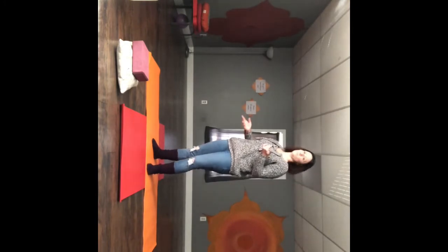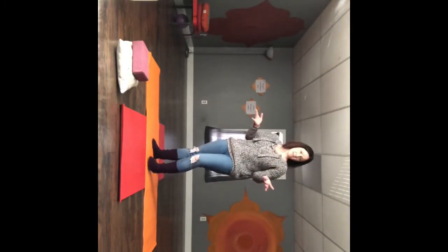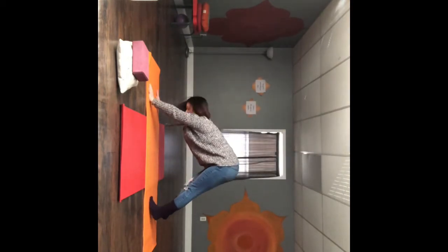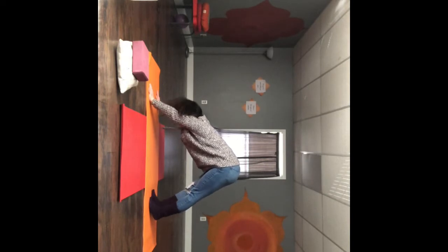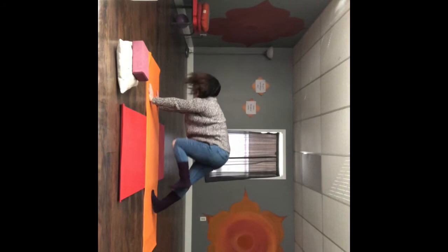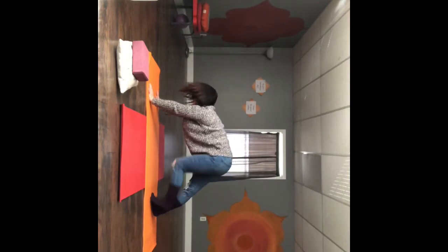We're going to start with one of the most intermediate, more challenging ways to get into it, which would be from your down dog. From your down dog, you would normally either kick one leg up and then bring it through, or you can even just bring it through from your down dog.